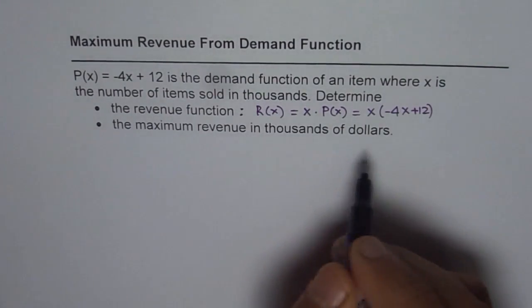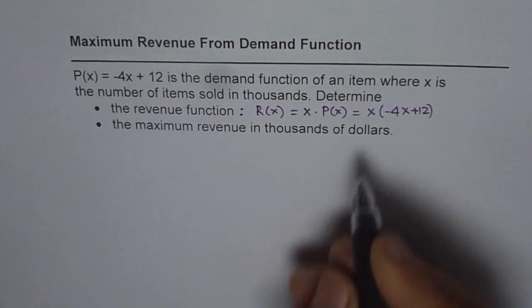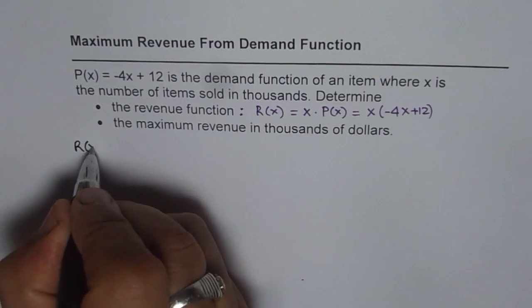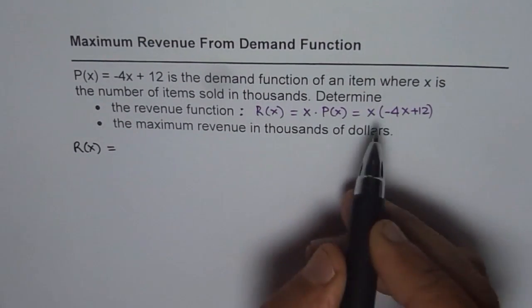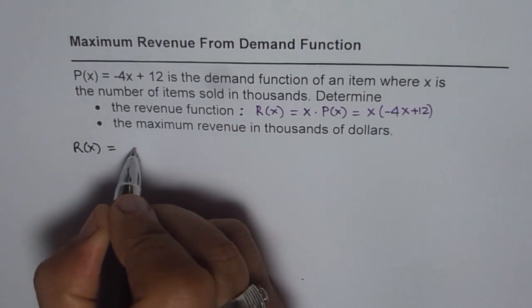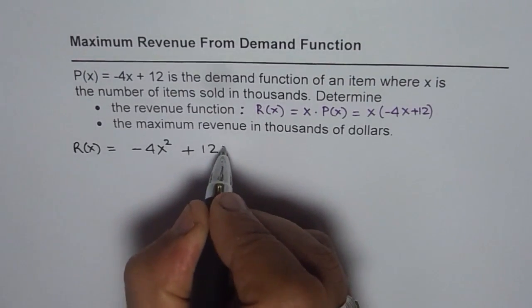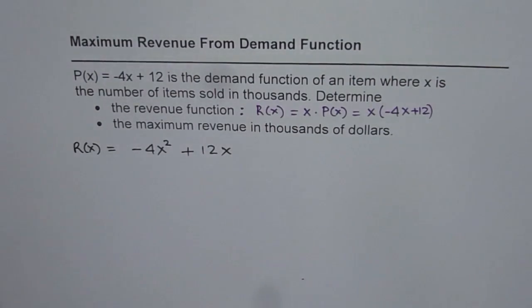Let me write it very clearly here. Then we will do the second part. So first part is the revenue function which is R(x) equals, let me expand this, it will be -4x² + 12x. So that is the revenue function.